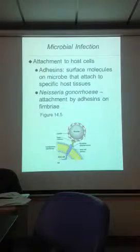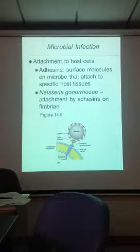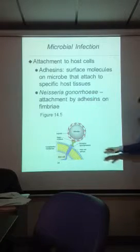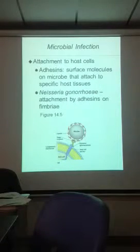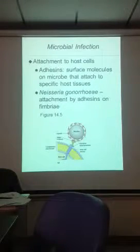Fimbriae look like short little hairs. So the microbe has these short hairs, and those attach to the urinary tract. That's how it can invade the reproductive system.